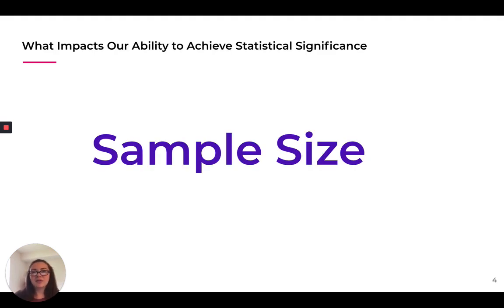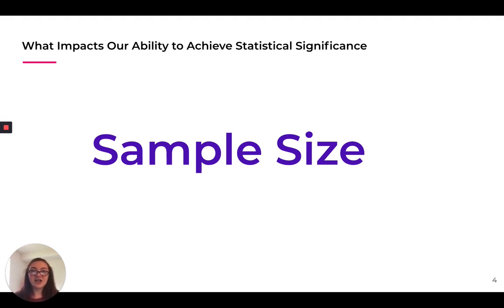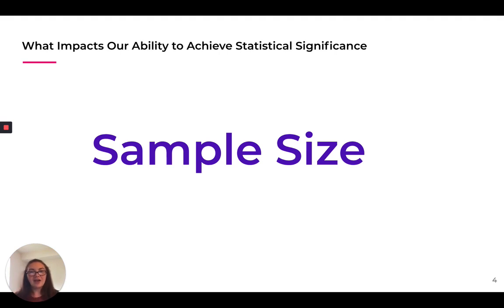One thing a lot of people ask is what impacts our ability to achieve statistical significance. The number one thing is your sample size. The larger your sample size, the easier it is to achieve statistical significance — you need less of a variation in results between your two variants than you would with a much smaller sample size. If you have a sample size of a thousand, you're much more likely to achieve statistical significance than if you had a sample size of ten.